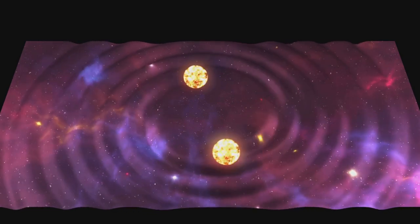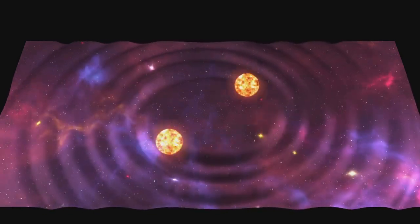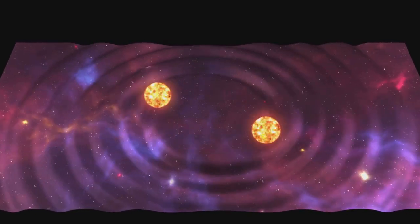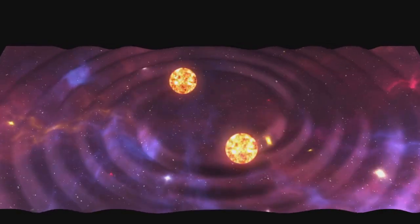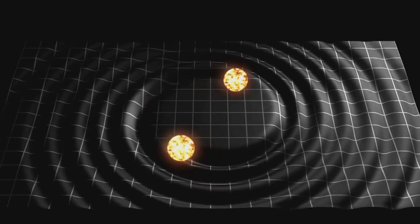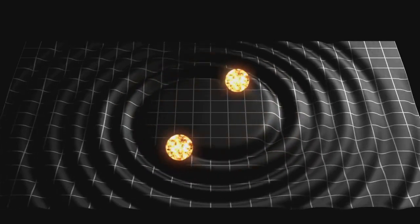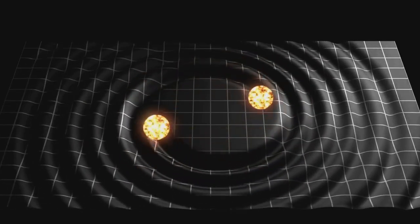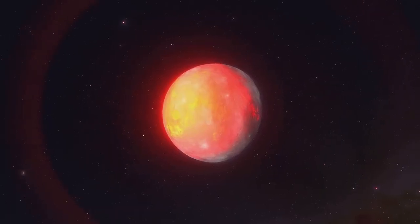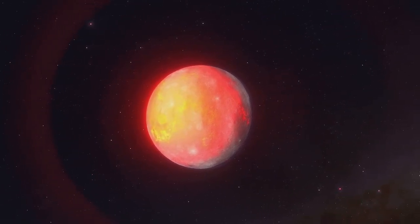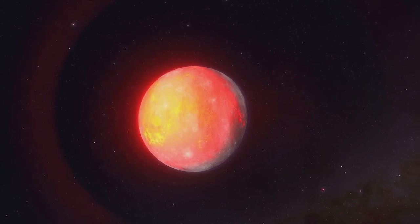Yet another fascinating technique they use is the radial velocity method. This operates on a different principle. It looks for the tiny, almost imperceptible wobble of a star. Believe it or not, this minute wobble is caused by the gravitational pull of a planet orbiting that star. It's quite astonishing, isn't it? In essence, these are just a few of the many methods scientists use to uncover the secrets of the universe.